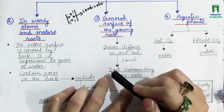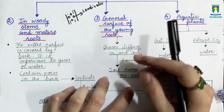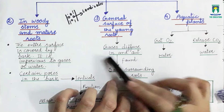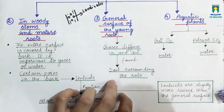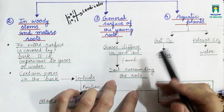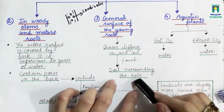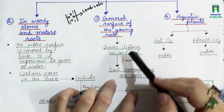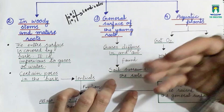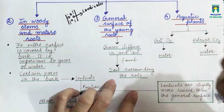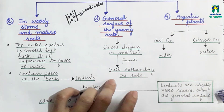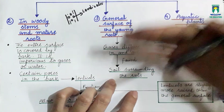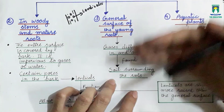Now let's discuss how gaseous exchange occurs in the general surface of young roots. The outer surface of young roots is quite thin. Since the roots are present in the soil surrounded by air spaces, gases can easily diffuse in and out because the outer layer of the roots is very thin.